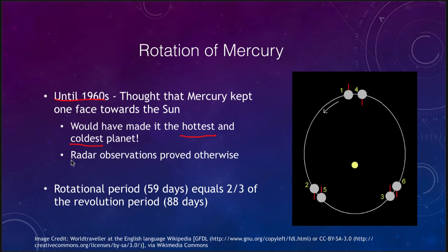However, radar observations in the 1960s showed otherwise. It turns out that Mercury's rotational period of 59 days is two-thirds of its revolution period of 88 days. This means Mercury is locked into what we call a resonance with the Sun — but it's not a one-to-one resonance where it rotates once for every revolution. It's actually a two-to-three resonance, meaning two years on Mercury are the equivalent of three days.